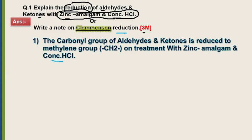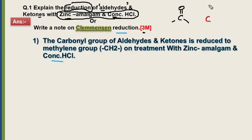Maine question hi wapas likha hai — aldehydes aur ketones ko reduce karna hai by using zinc amalgam and concentrated HCl. Humne Hund's model mein dekha tha ki aldehyde aur ketones mein carbonyl group hota hai, yaani C double bond O hota hai. Aldehyde mein bhi hota hai aur ketone mein bhi, toh difference kahan hai — yeh important hai.